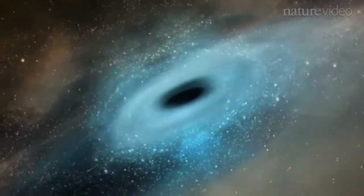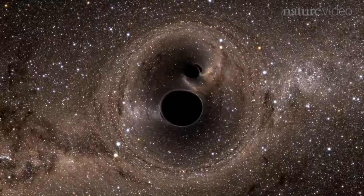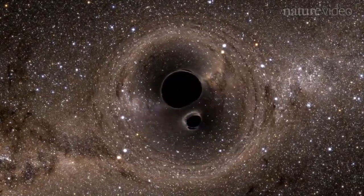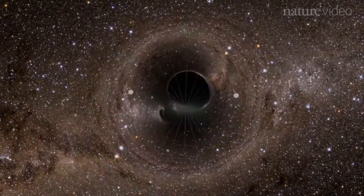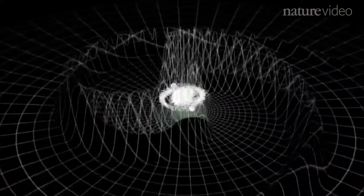Later, researchers realized that if two particularly giant masses, like two black holes, are trapped in each other's gravitational field, they should start to spiral in towards each other, and so would the distortions they make to space-time.